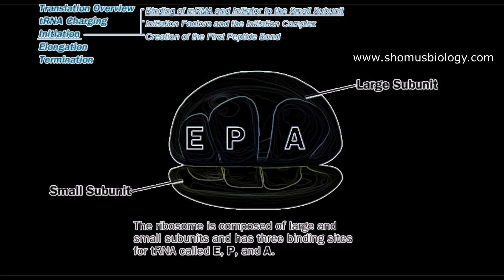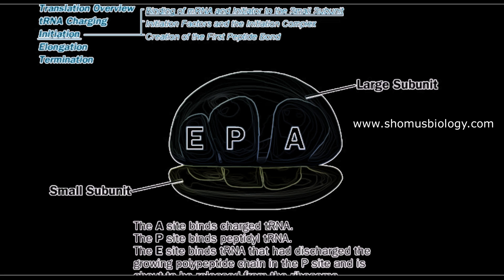We'll start our discussion with initiation. We have large subunit and small subunit, and we have E site, P site, and A site integrated into it. E means exit, P means peptidyl, and A means aminoacyl tRNA attachment site. Three sites have their own role.